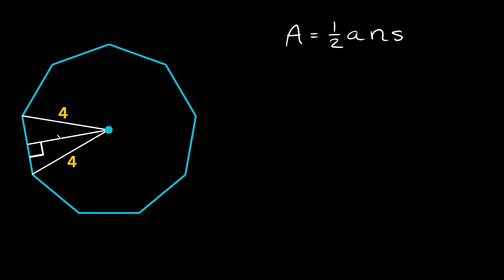Here's the next example. We have another regular polygon this time with nine sides. We're given the distance from the center of the polygon to the vertex as 4, and the apothem is drawn in but its length isn't given, so we'll have to figure that out. One helpful thing is to find a central angle.